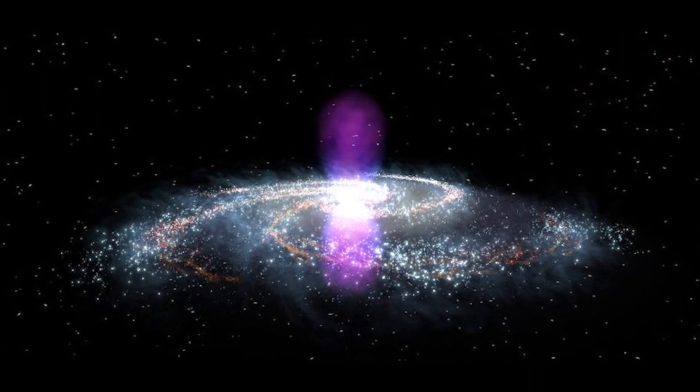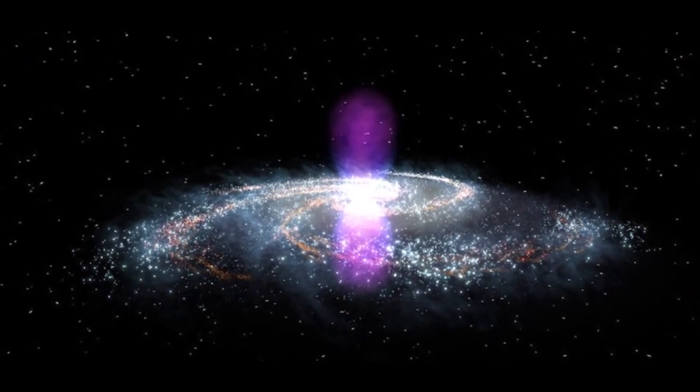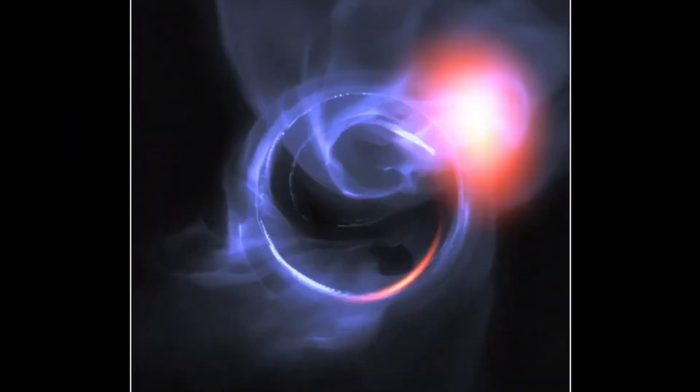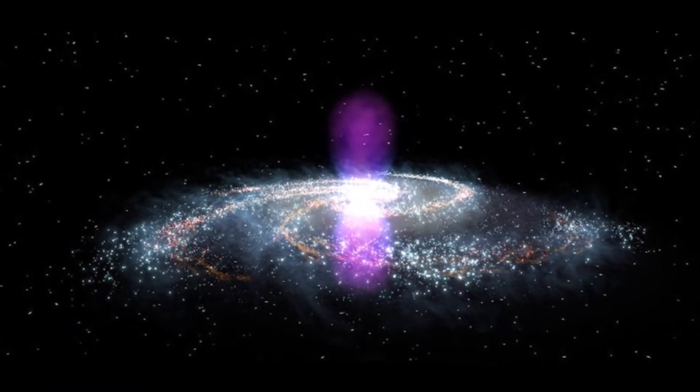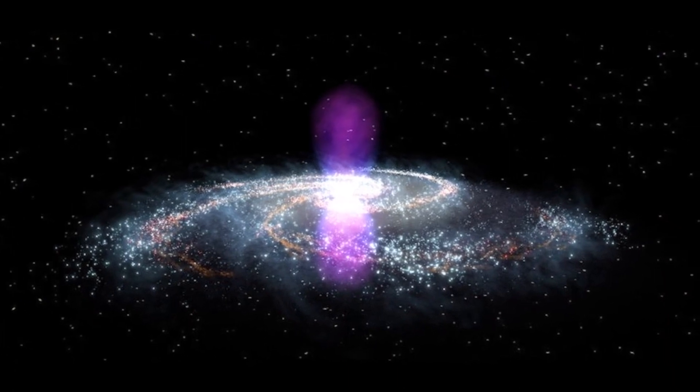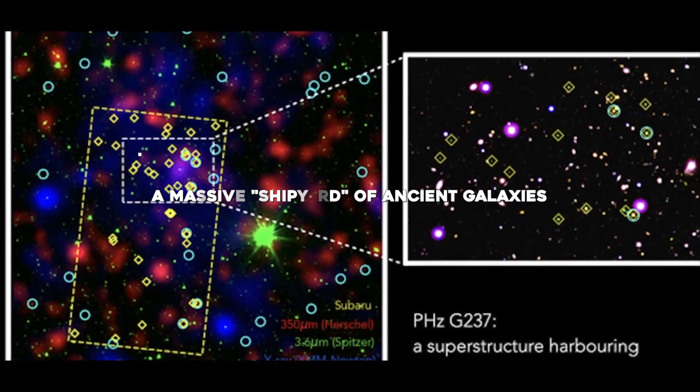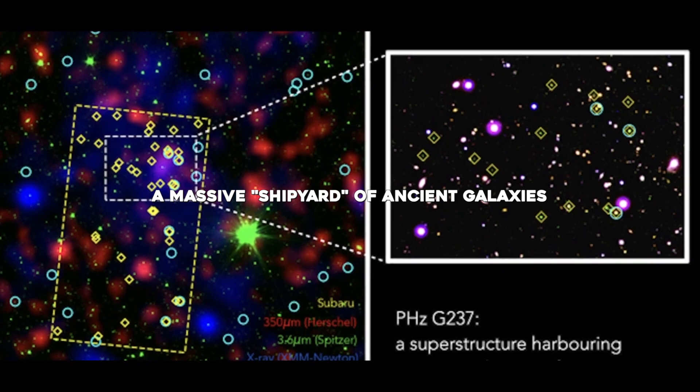The team could only speculate about the source of this cosmic ray barrier, but suggested it could be a jumble of magnetic fields related to our galaxy's central black hole, the monstrous Sagittarius A*.